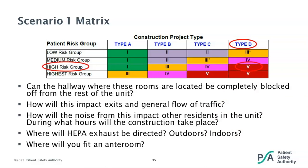Other important items to consider in this scenario include: how we block off the hallway where these rooms are located to be completely separated from the rest of the unit still housing other residents; how this work impacts exits and general traffic flow; how the noise will impact other residents and during what hours construction will take place; where the HEPA exhaust will be directed — can it go directly outdoors or will it need to exhaust indoors; and where you'll fit the anteroom. With Class V precautions, an anteroom is required. It needs to be large enough for equipment staging, cart cleaning, and workers, and should be situated adjacent to the entrance of the construction work area.